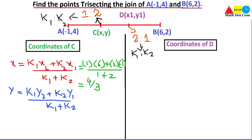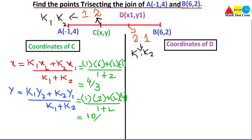Now we find the y-coordinate of point C. k1 is 1 and y2 is the y-coordinate of point B, which is 2. k2 is 2 and y1 is the y-coordinate of point A, which is 4, divided by 1 plus 2. That gives 2 plus 8 equals 10, so we get 10 over 3. These are the x and y coordinates of point C.